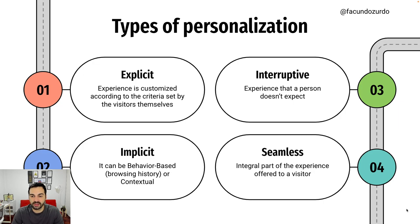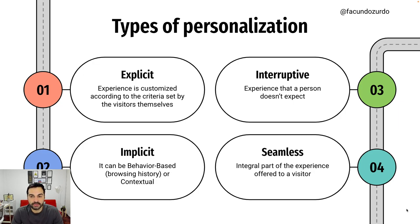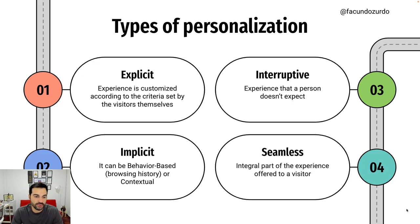Another type of personalization is interruptive personalization, which is an experience the person is not expecting — for example, a modal on a website or a notification on your mobile phone. And finally, we have seamless personalization, which is the custom experience the user is expecting and it's an integral part of the whole service or product. An example could be Spotify — if you use Spotify to listen to music, you expect to find interesting shows, new albums, and new releases related to your musical interests.